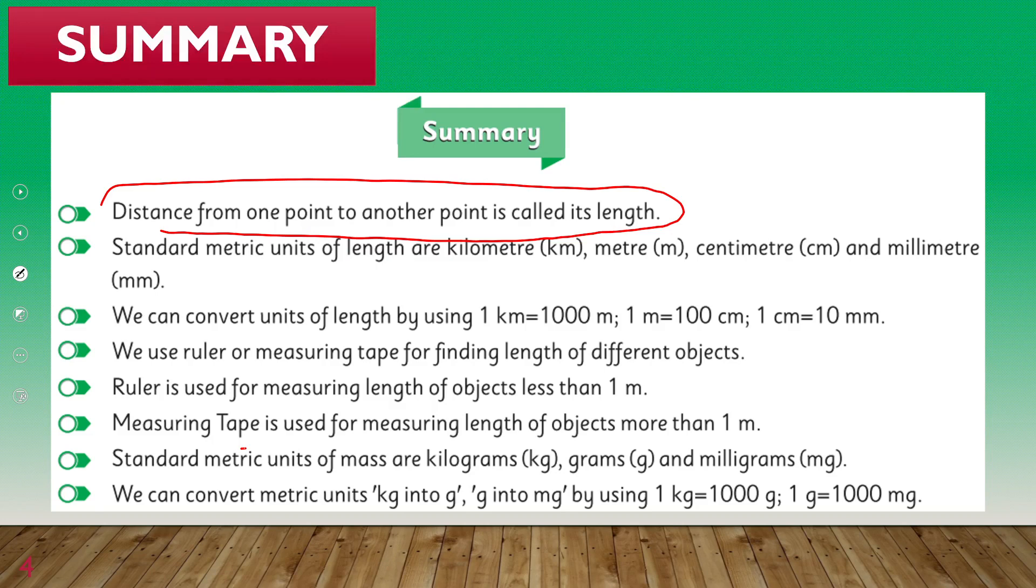These are standard units that we used for length measurement. Then we can convert units of length using 1 kilometer equals 1000 meters, 1 meter equals 100 centimeters, and 1 centimeter equals 10 millimeters.